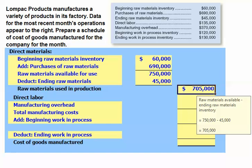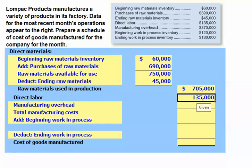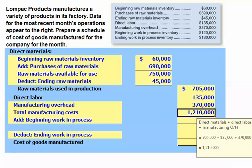Next, we add to our raw materials used in production our direct labor of $135,000, and our manufacturing overhead of $370,000. This gives us our total manufacturing cost for the period of $1,210,000.